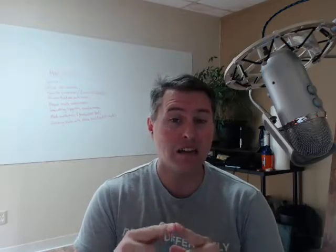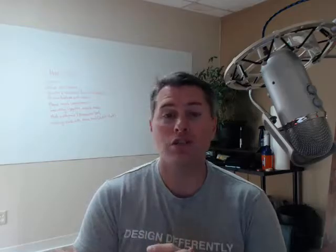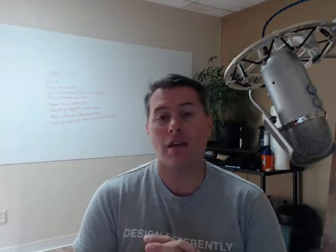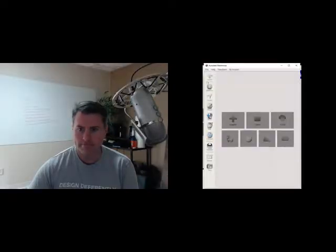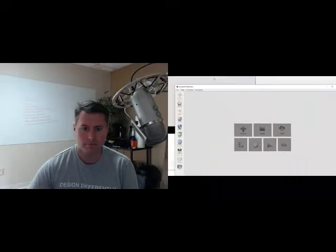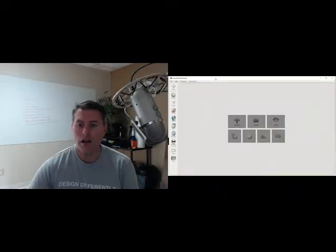This question was asked by Fred — thank you for asking. The question is: how does one identify the support structures to be printed by a second extruder on a dual-extruder machine? This is a MeshMixer question, so let me bring up MeshMixer and share my screen so you can see it.